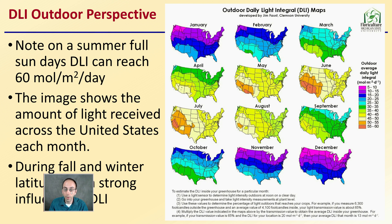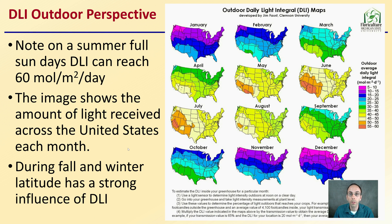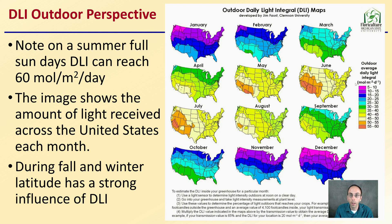For an outdoor perspective, looking at different months, note that on summer full-sun days, DLI can reach 60 moles per meter squared per day. An image shows the amount of light received across the United States each month. During fall and winter, latitude has a strong influence on DLI — the higher the latitude versus closer to the equator will greatly impact DLI. Keep that in mind when growing outdoors or in a greenhouse dependent on natural sun.